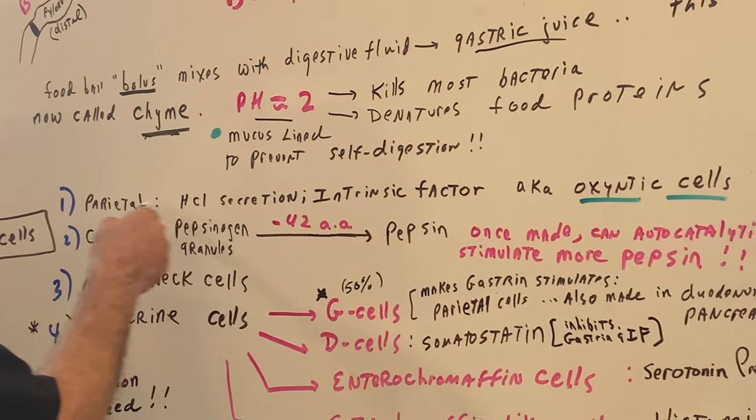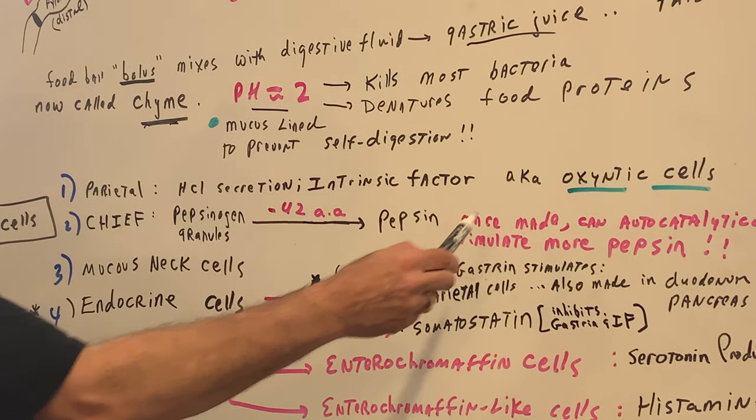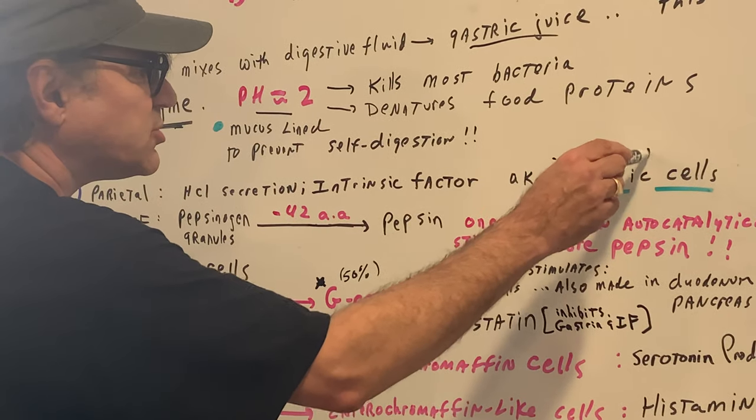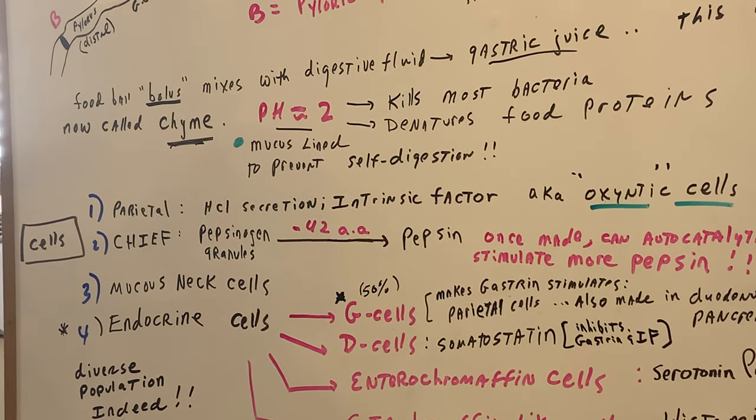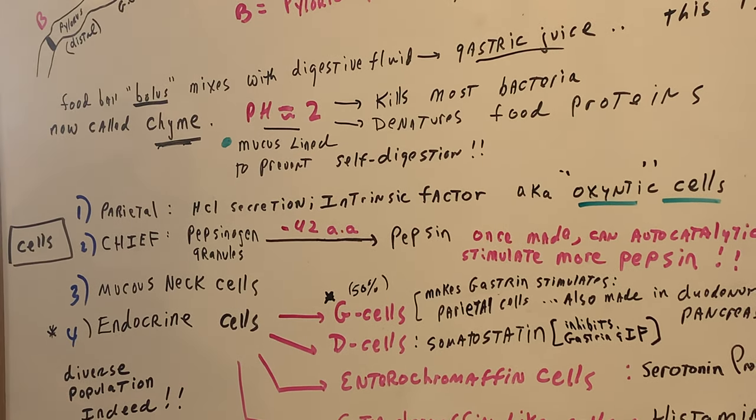Oxintic cells are also known as parietal cells, so you might sometimes see this word in grad school. Oxintic cells, these are the parietal cells. So remember HCL and intrinsic factor.